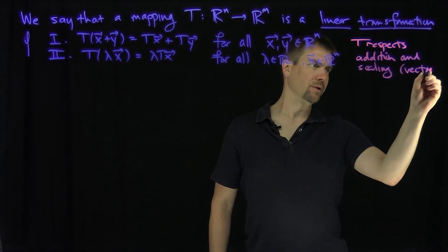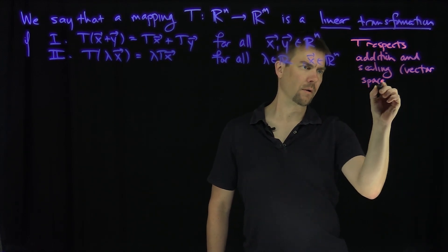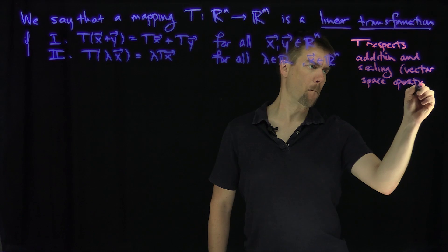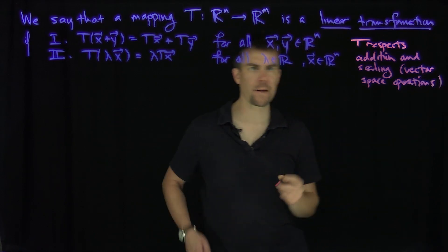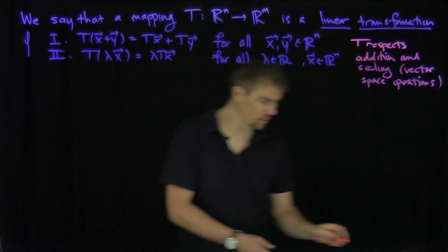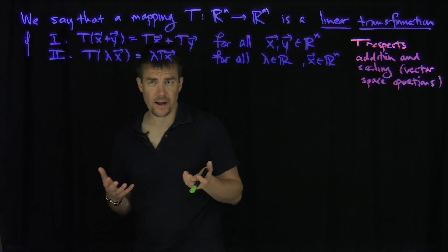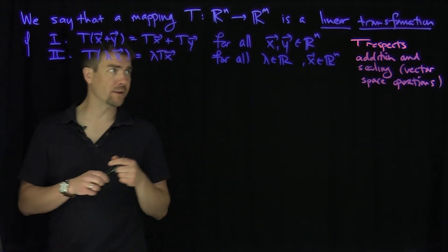And these are the vector space operations on Euclidean space. Okay, excellent. And now, the result we'd like to focus on is that we already have a class of things we know correspond to the transformations.